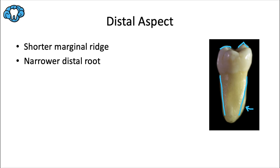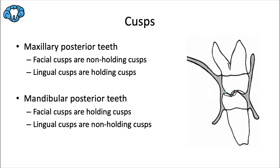You might remember we saw the opposite trend in the maxillary molars, where the lingual cusps were more blunted while the facial cusps were taller. In the maxillary molars, the lingual cusps were the holding cusps, and in the mandibular molars the facial cusps take that role. Those holding cusps are in contact most directly with the opposing teeth — hence why they're by design more blunted — while the non-holding cusps are taller in order to keep the soft tissues away from the functioning teeth.